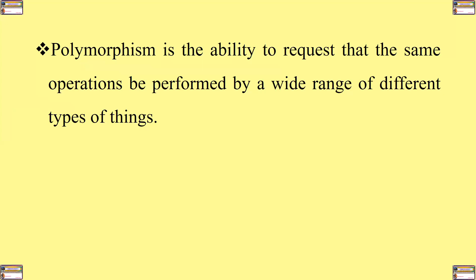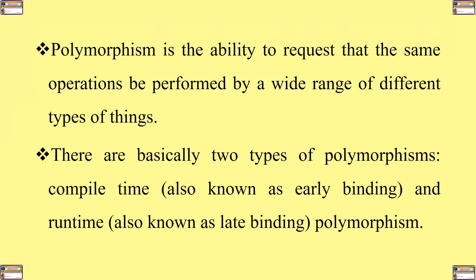Polymorphism is therefore the ability to request that the same operations be performed by a wide range of different types of things. There are basically two types of polymorphism: compile time, also known as early binding, and runtime, also known as late binding polymorphism.